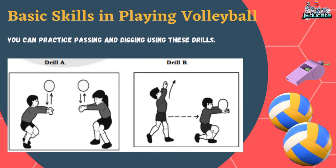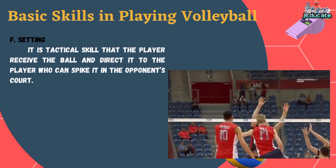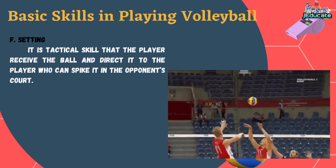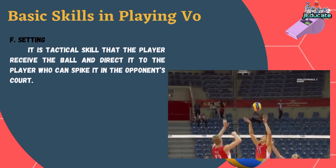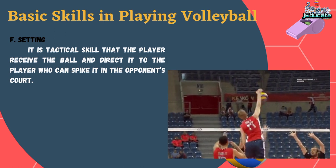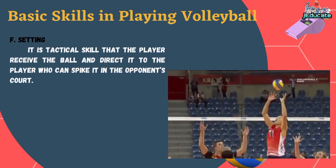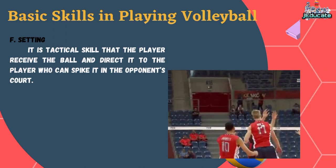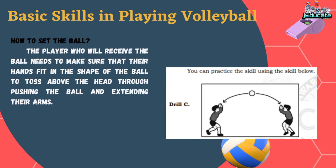You can practice passing and digging using drills. Letter F, Setting — it is a tactical skill where the player receives the ball and directs it to the player who can spike it into the opponent's court. How to set the ball: the player who will receive the ball needs to make sure that their hands fit in the shape of the ball, then toss it above the head by pushing the ball and extending their arms.